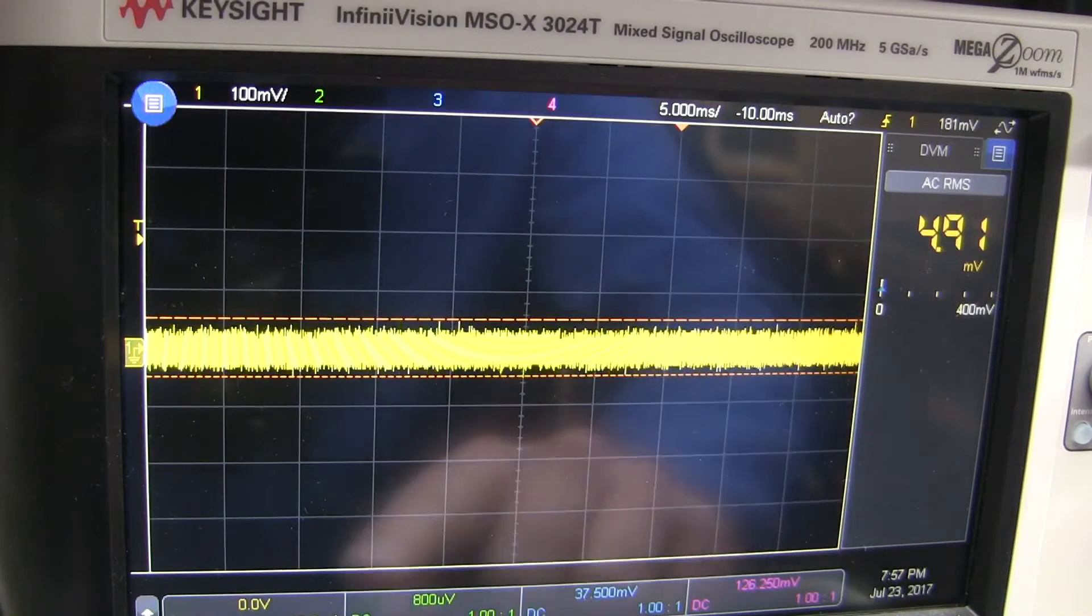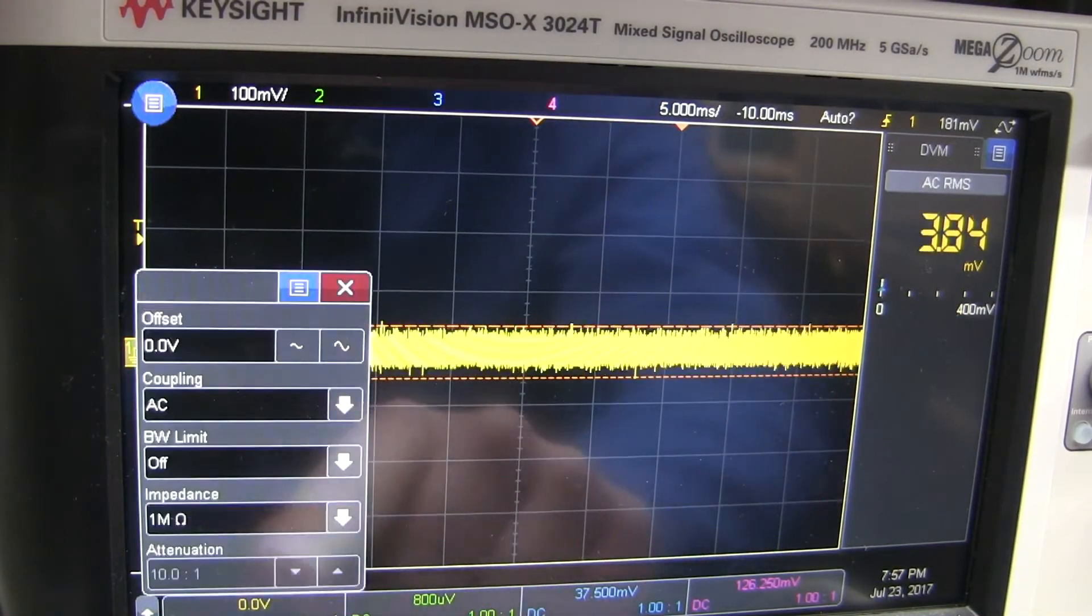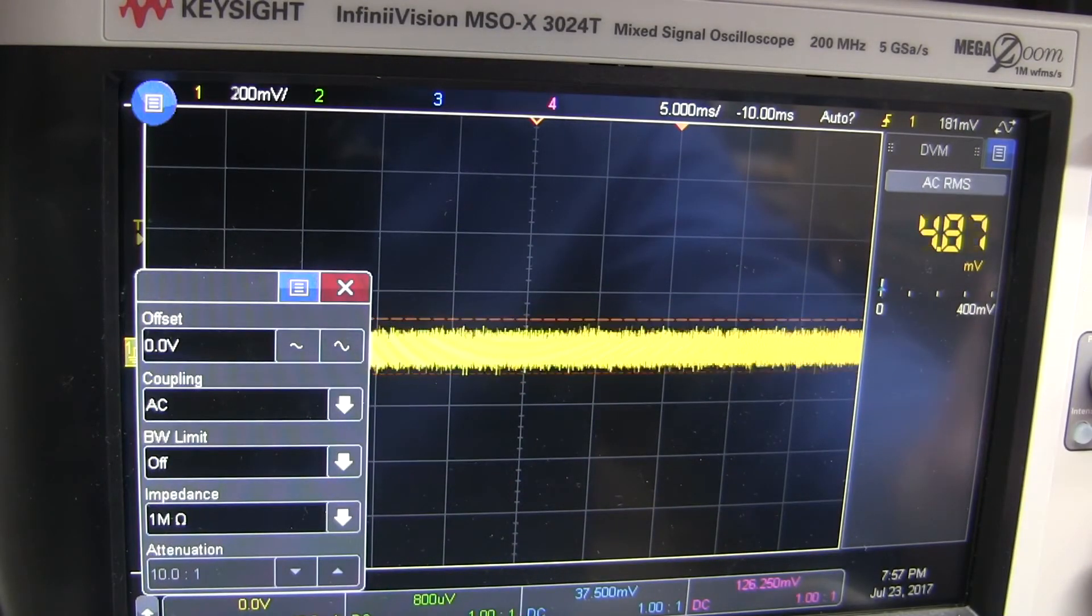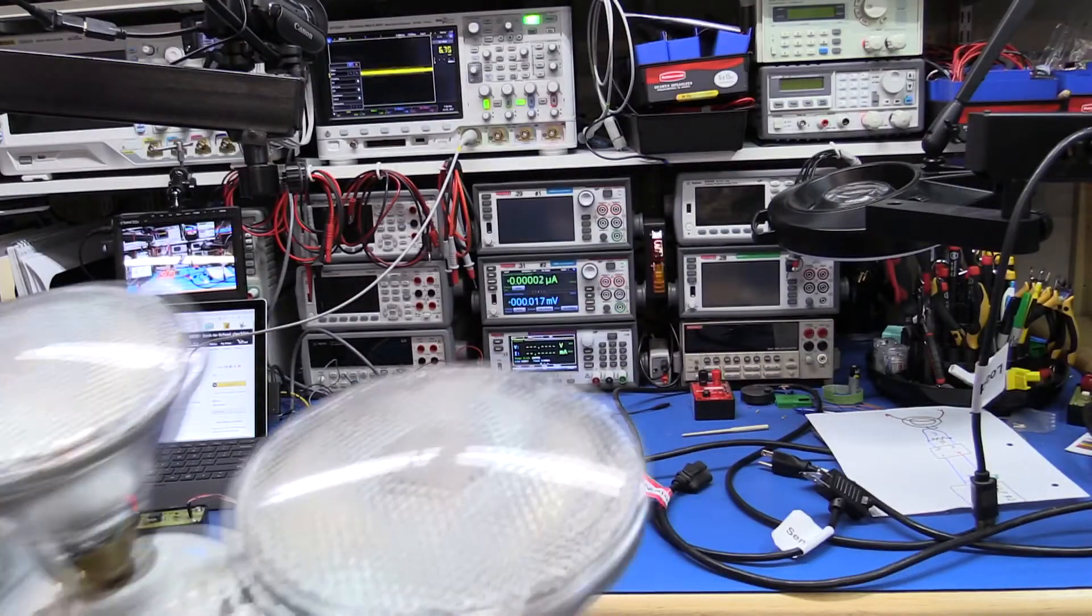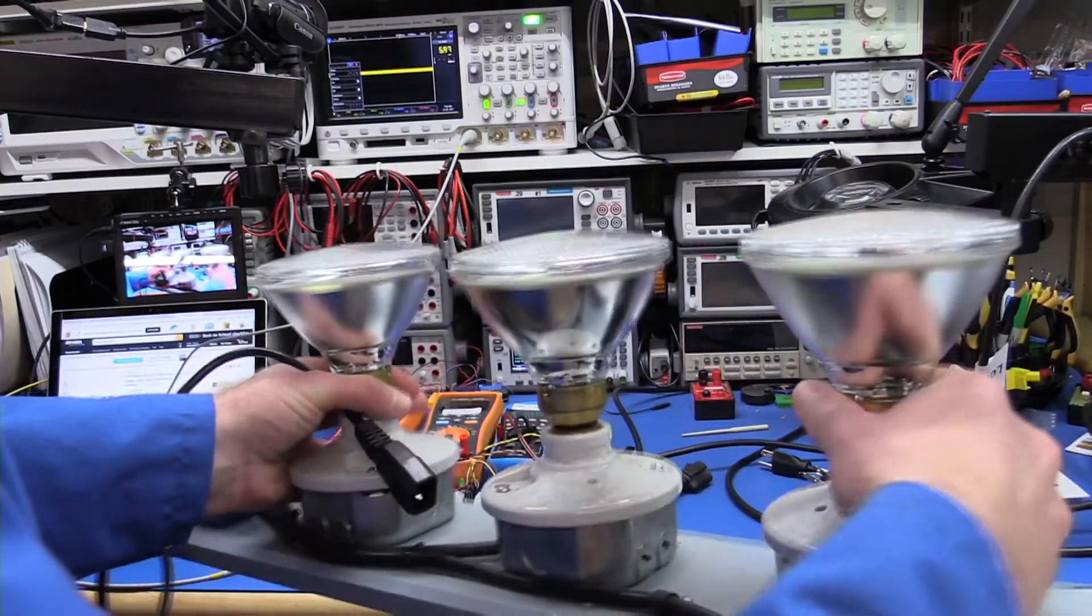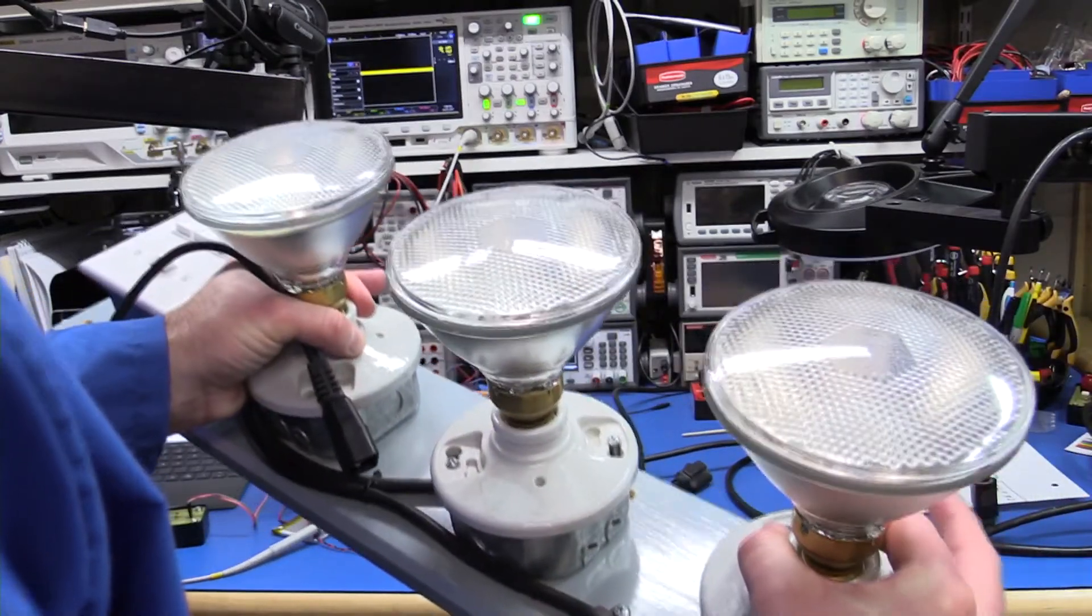All right. So here we have our scope all hooked up and we are set to AC decoupling at probably need at least 200 millivolts. Instead of using the pump because it's noisy, I'm going to use this load of 300 something 150 watt lamps in series.